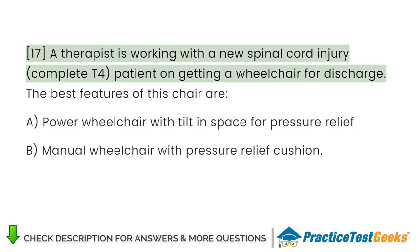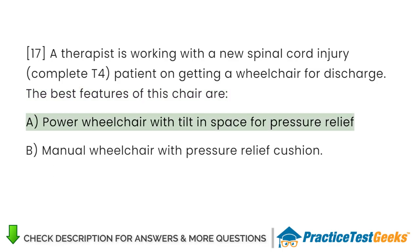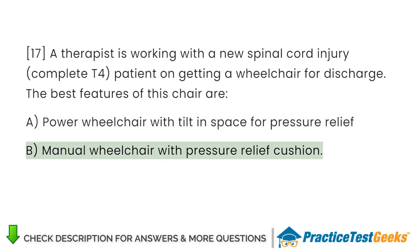A therapist is working with a new spinal cord injury, complete T4 patient on getting a wheelchair for discharge. The best features of this chair are: A. Power wheelchair with tilt and space for pressure relief. B. Manual wheelchair with pressure relief cushion.